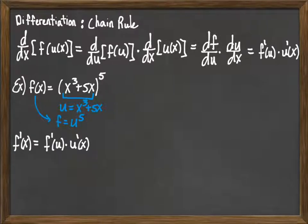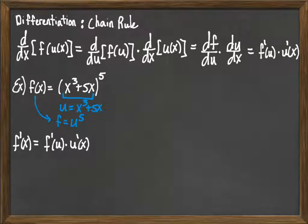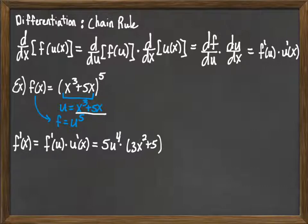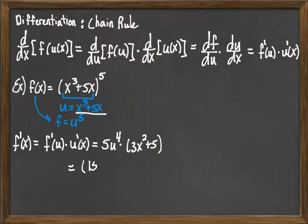By the chain rule, we compute f prime of u times u prime of x. f of u is a power function — u to the fifth — so its derivative is 5u to the fourth. Then we take the derivative of u, which is the derivative of the polynomial x cubed plus 5x. That gives us 3x squared plus 5. At this point we can multiply the 5 through, giving 15x squared plus 25.